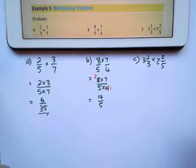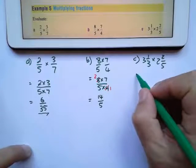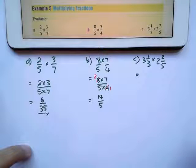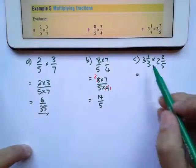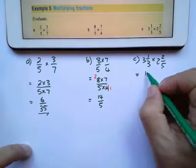Right, the last one. Please don't try to do this as a mixed number. Always write as an improper fraction first. So we'll say 3 times 3 is 9 plus 1 is 10 thirds.